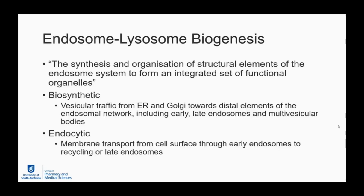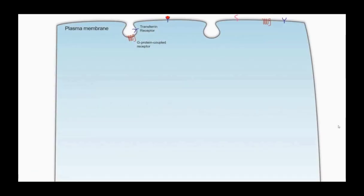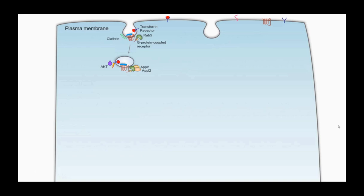The organelles are involved in the biosynthetic or endocytic pathways. The biosynthetic pathway involves vesicular traffic from the endoplasmic reticulum and Golgi towards the distal elements of the endosome network, including early, late endosomes, and multivesicular bodies. The endocytic pathway involves membrane transport from the cell surface through early, recycling, and late endosomes. Here at the plasma membrane, ligands such as transferrin bind membrane-bound receptors, inducing phosphorylation. That event enables RAB5 to bind, and clathrin forms a clathrin-coated pit creating an endocytic vesicle.